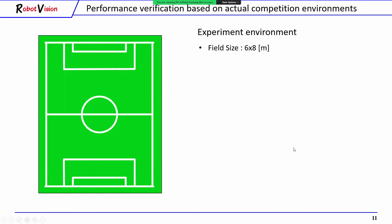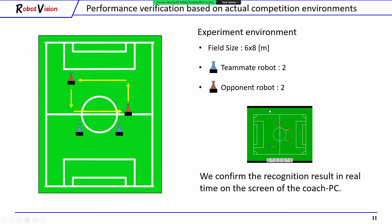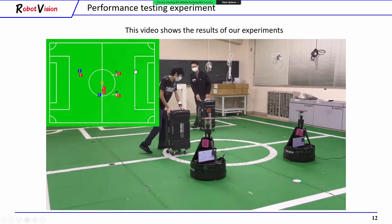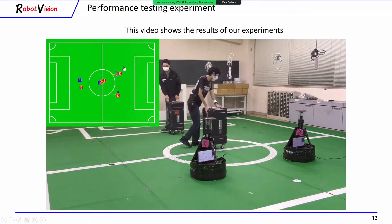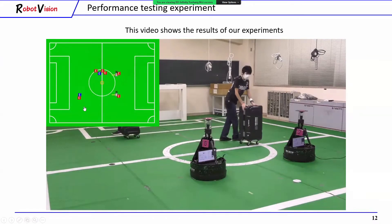Finally, we perform a performance verification experiment. The size of the field is 6 by 8 meters. This experiment uses two robots and two moving obstacles. We confirm the recognition result in real time on the screen of the coach PC. As you can see, our robot detects the position of the two obstacles in real time successfully.